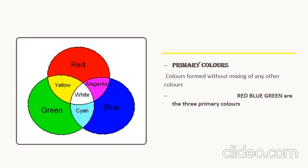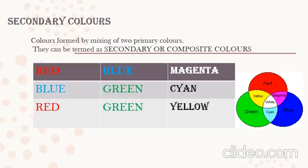Now what could be your secondary color? When I add two primary colors, the next color which I am going to get is called my secondary color. So now just recollect your primary colors — your primary colors were red, blue, and green. Now if I am going to add any two of these, I will get a new color. This new color can be termed a secondary color or composite color.